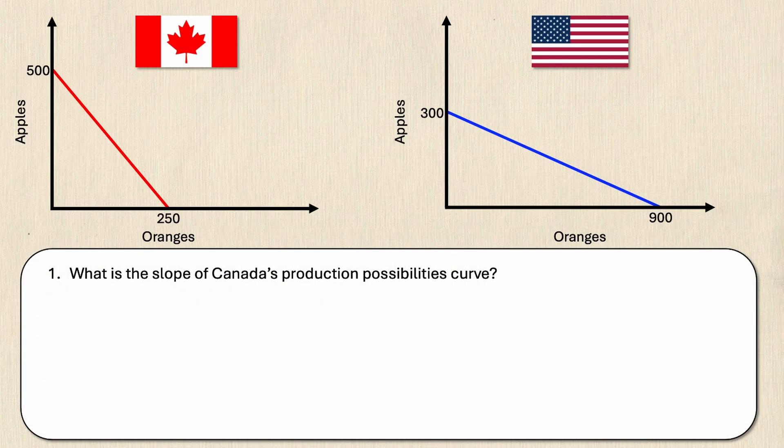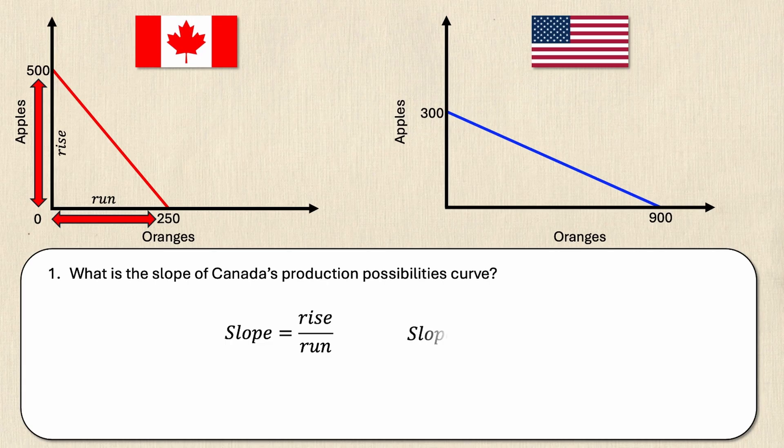Starting with the first question which asks what is the slope of Canada's production possibilities curve. As you probably remember from grade nine math, slope is just equal to rise over run. Remember that the origin is going to be zero, so the rise is the distance between zero and 500 and the run is simply the distance between zero and 250. If I substitute those values into my equation then slope equals 500 over 250, and simplifying that I get slope equals two.